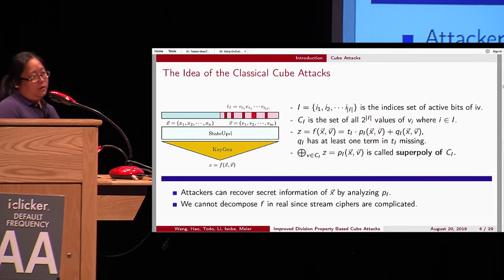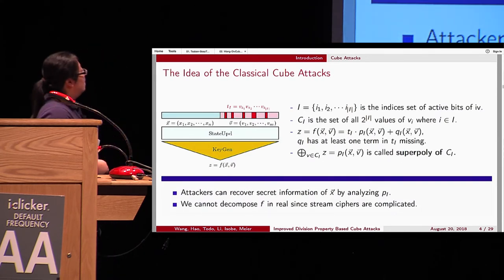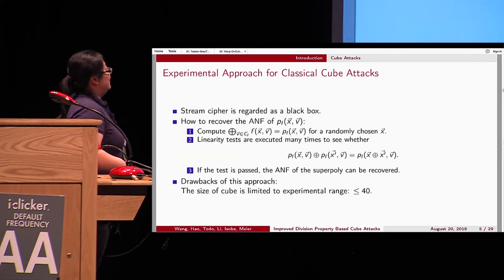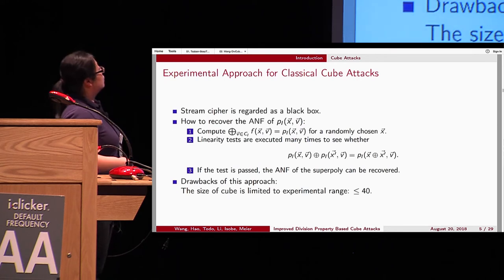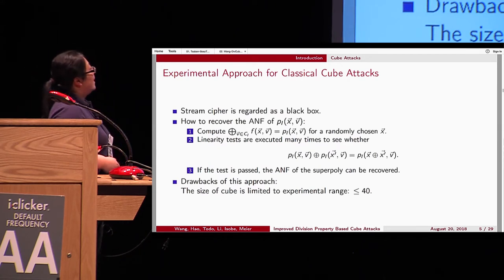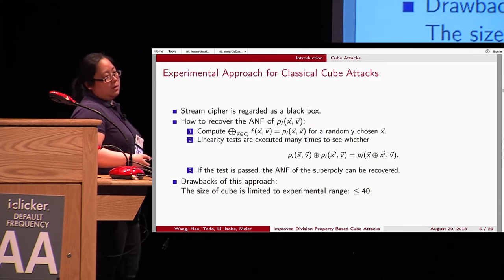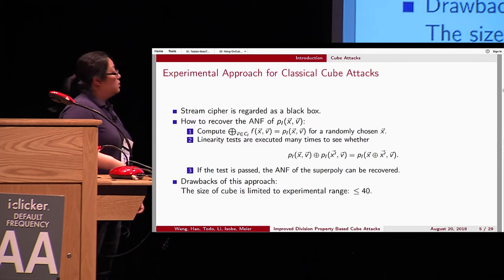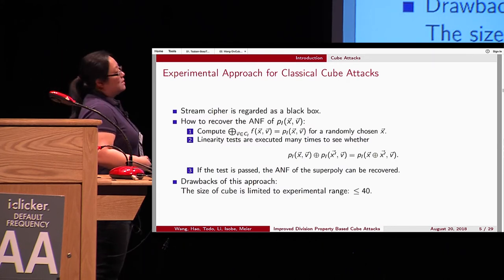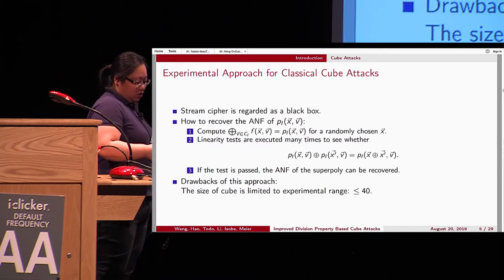Unfortunately, in practice we cannot decompose f directly. What the traditional cube attack does is treat the stream cipher as a black box, randomly choose some cubes, and do a linearity test to see if the superpoly is linear. If it is linear, the secret information is recovered directly. But the not-so-good thing is that this is an experimental result — you can only try cubes of size smaller than 40.